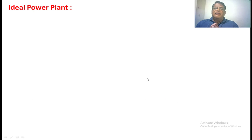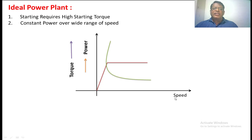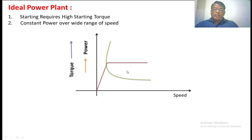The ideal power plant is one which can give, at zero speed, a high amount of torque — essentially infinite torque. When the speed is very high, the torque will become zero. On the x-axis we have speed, on the y-axis we have torque as well as power. At zero speed, the torque goes to infinity. As speed increases, the torque decreases so that the power given by the power plant is constant. Up to a certain speed the power increases, after that the power is constant across the speed range of the engine. These are the ideal power plant characteristics.